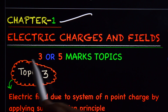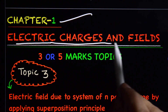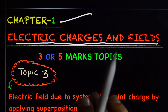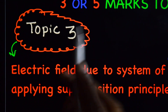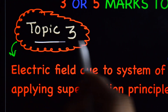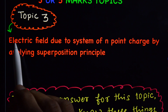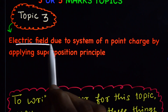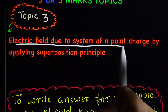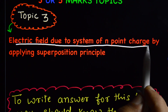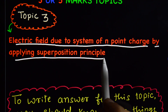Chapter 1: Electric Charges and Fields. Topic 3: Electric field due to a system of n point charges by applying the superposition principle.